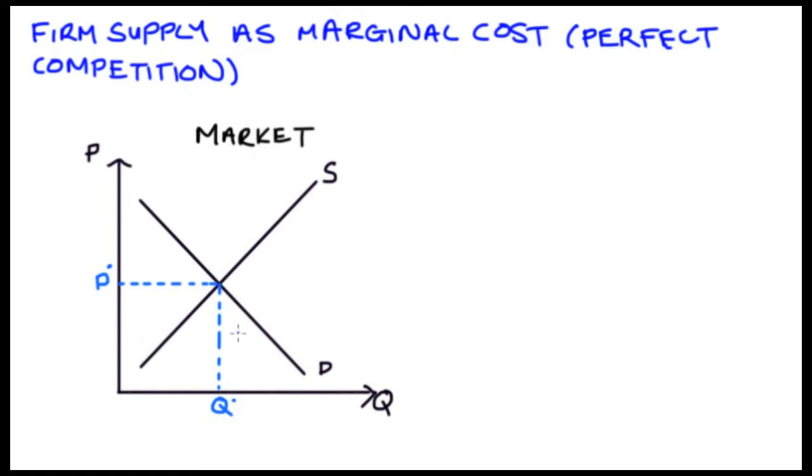So for instance in equilibrium here at p star our market is supplying q star. If it was any other price say p prime then to find out how much is supplied we read off the supply curve and we're going to be willing to supply q prime in the market and we can do this for any range of prices say p prime prime again we just read off the supply curve. For the market supply curve this gives us a relationship between price and quantity supplied in the market but we need something different for the firm.